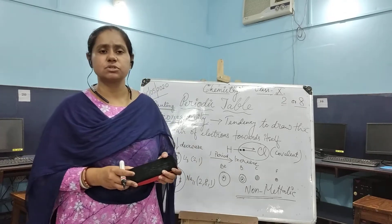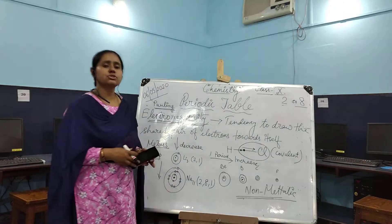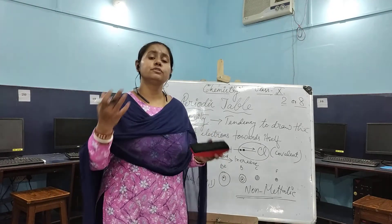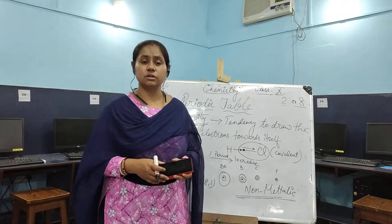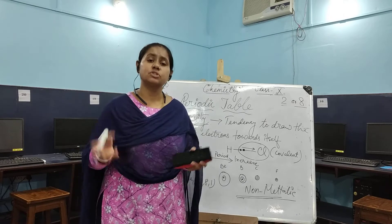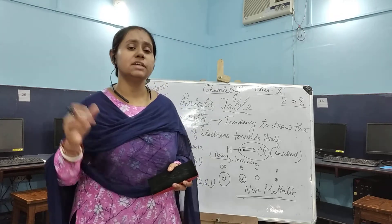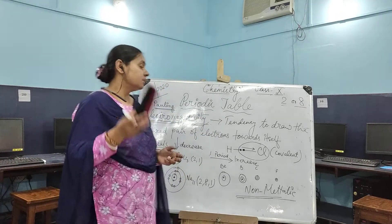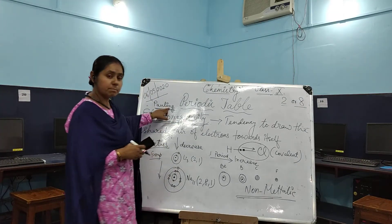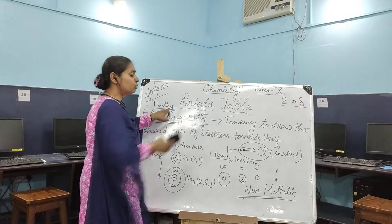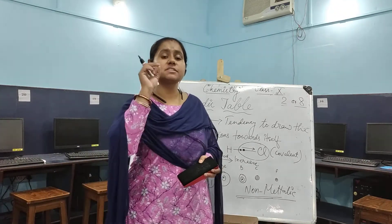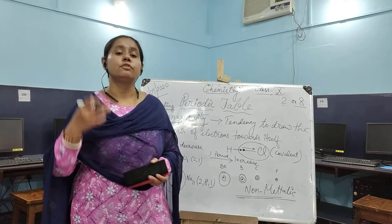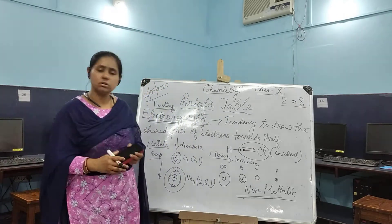The electronegativity values of different elements tell you whether the element will form an ionic bond, a covalent bond, or undergo coordinate bonding. The Pauling scale says that fluorine — the first element of group 17 — is highly electronegative in nature, followed by chlorine, then oxygen, and others.